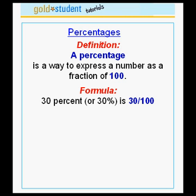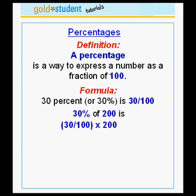An example. 30%, which is written as 30 followed by the percent sign, is simply another way to write the ratio 30 divided by 100. For instance, 30% of the number 200 is 30 over 100 times 200, which is equal to 60. Therefore, 30% of 200 is 60.